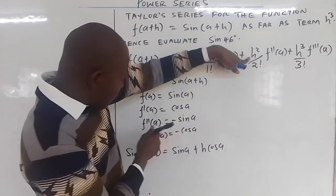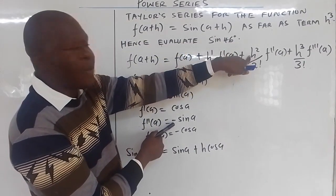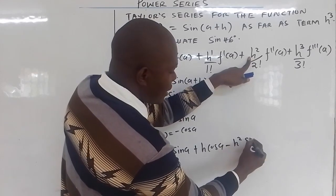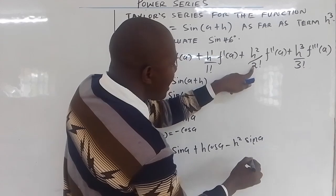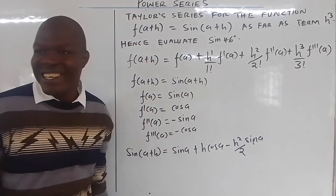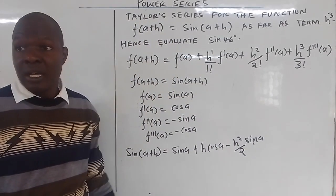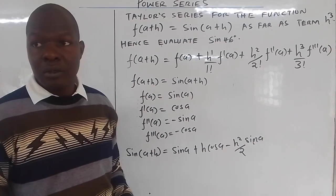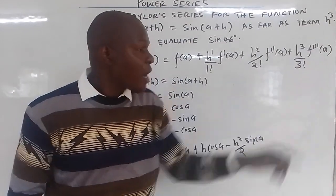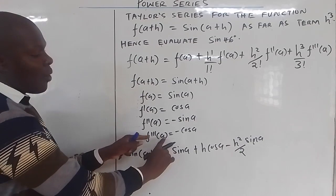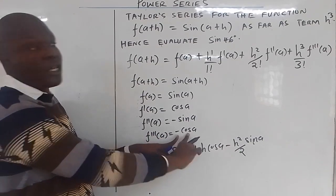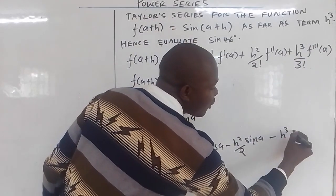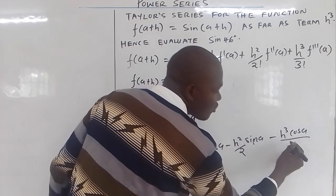What is f''(a)? It is -sin(a) times h squared, so that gives us minus h squared sin(a) over 2 factorial, which is just 2. Then f'''(a) is -cos(a), so that is -cos(a) times h cubed, giving minus h cubed cos(a) over 3 factorial, which is 6. We have now substituted everything.